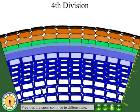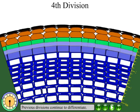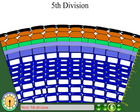In the fourth division, the cambium divides into another xylem mother cell, while the existing cells continue to differentiate.